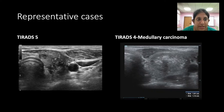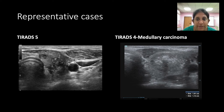These are the representative cases. This is a TIRADS 5 lesion — a solid, hypoechoic nodule with irregular margins and punctate echogenic foci, giving a total score of 10 points. This is a TIRADS 4 lesion — a well-defined hypoechoic nodule compared to the surrounding thyroid parenchyma with coarse calcifications, scoring 4 points and assigned TIRADS 4. It turned out to be medullary carcinoma.